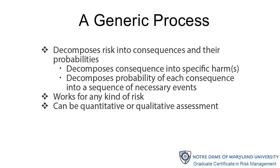A generic process proceeds by decomposing a specific risk into its consequences and their probabilities. First, it decomposes consequence into specific harm or harms, thereby identifying the consequences of concern for decision making. Next, it decomposes the probability of each consequence into a sequence of events necessary for that particular harm to occur. This process works for any kind of risk, and it can be useful for quantitative or qualitative assessment. In this course, we will be looking at its qualitative risk assessment technique.